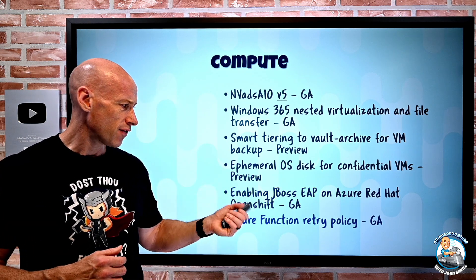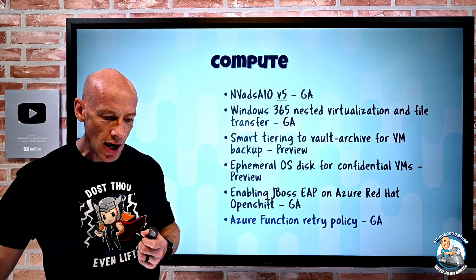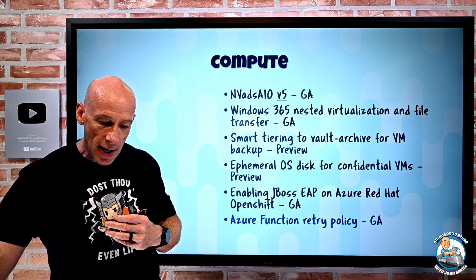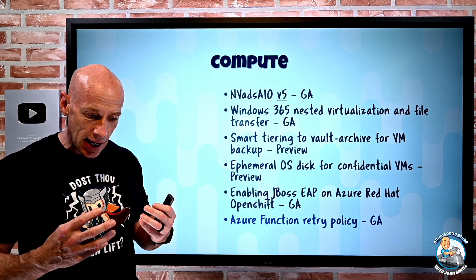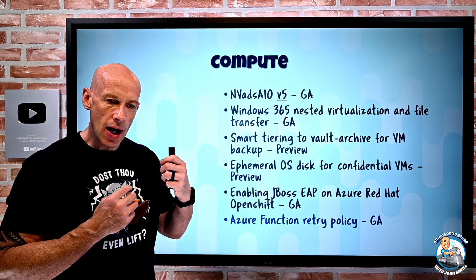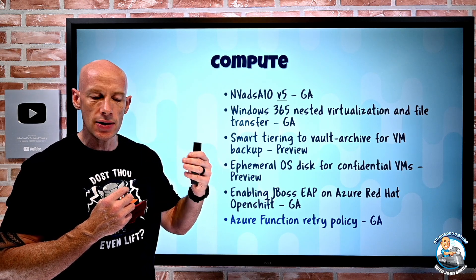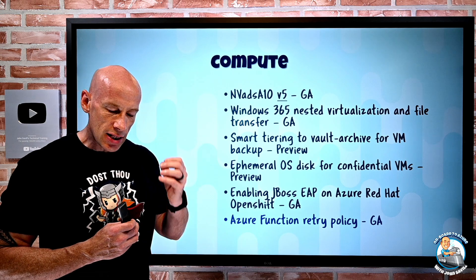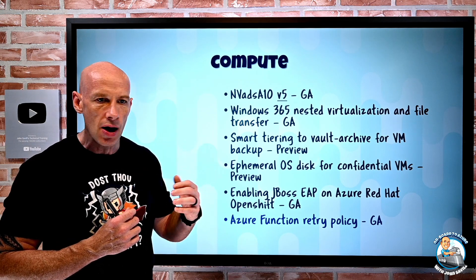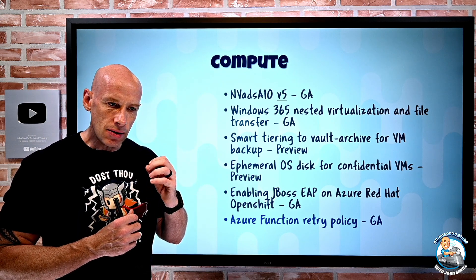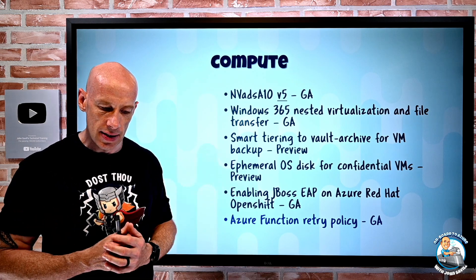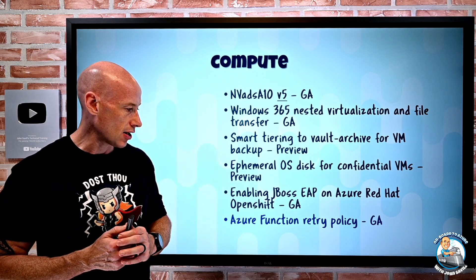Azure Functions now have a retry policy when using Event Hub and timer triggers. If there's a failure — an uncaught exception — the function will retry up to a number of retries you specify. This retry policy gets evaluated whenever there is a timer or Event Hub-based trigger and a failure occurs.